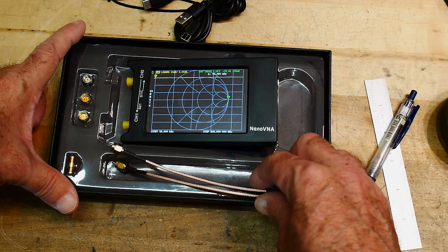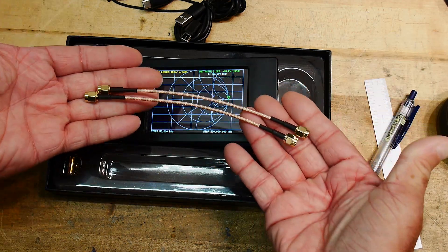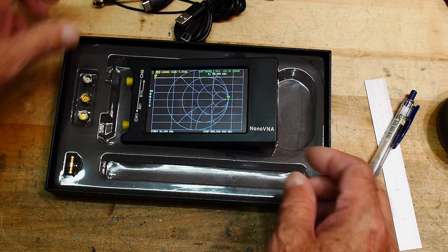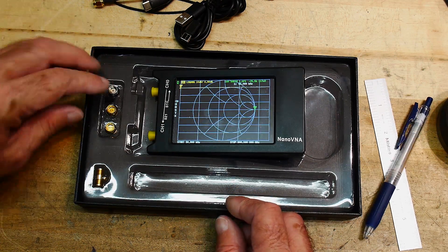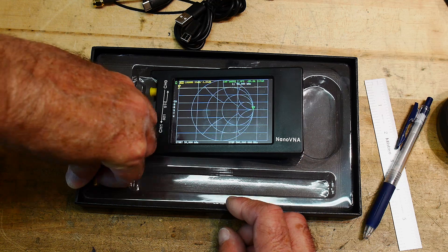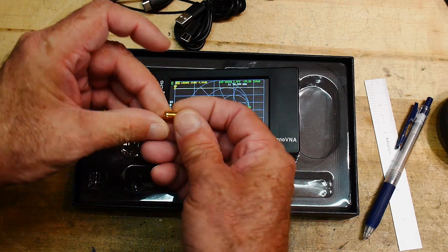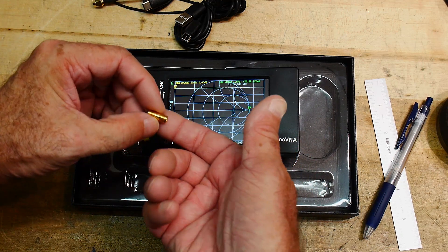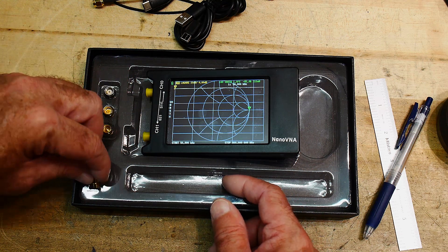Comes with the normal cal kit. So a load, an open, and a short. It also comes with a through, a female-female SMA. So that's nice. That's nice to have included. So didn't used to come with that.